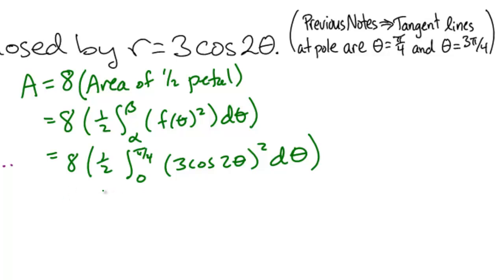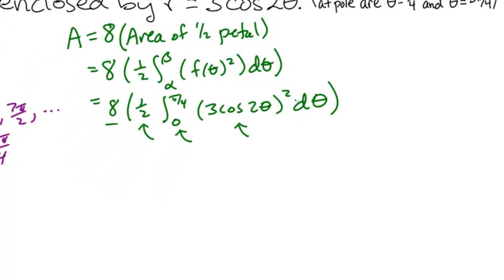Now, this would be the setup for the problem. We can clearly see all of the pieces in our entire plan. Eight symmetrical regions, the one half from the formula, the angles 0 to pi over 4, our function squared d theta. So now, if we start to simplify the integral so that we can solve it,